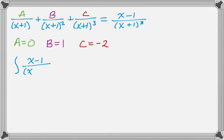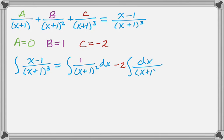So really the integral of x minus 1 over the quantity x plus 1 cubed is the integral of 1 over x plus 1 squared dx minus 2 times the integral of dx over x plus 1 cubed. Then I can just do that integral. So you get negative quantity x plus 1 to the negative first, and then plus 2 the quantity x plus 1 to the negative 2 plus c.